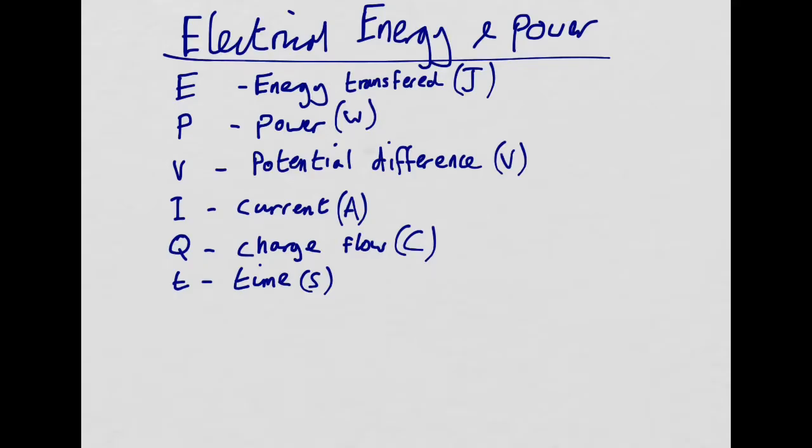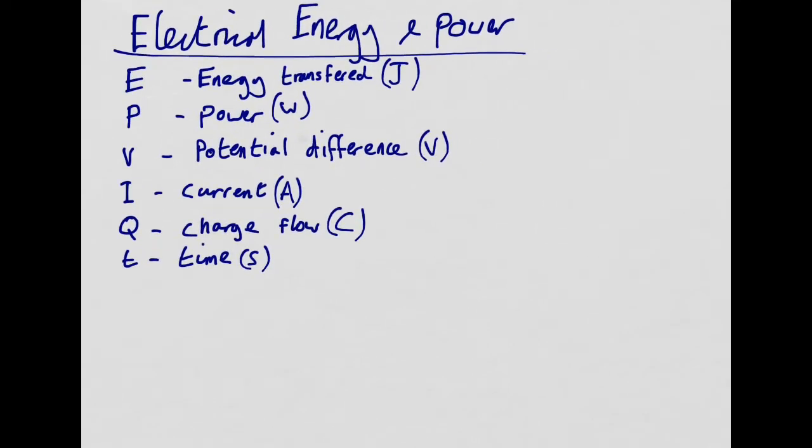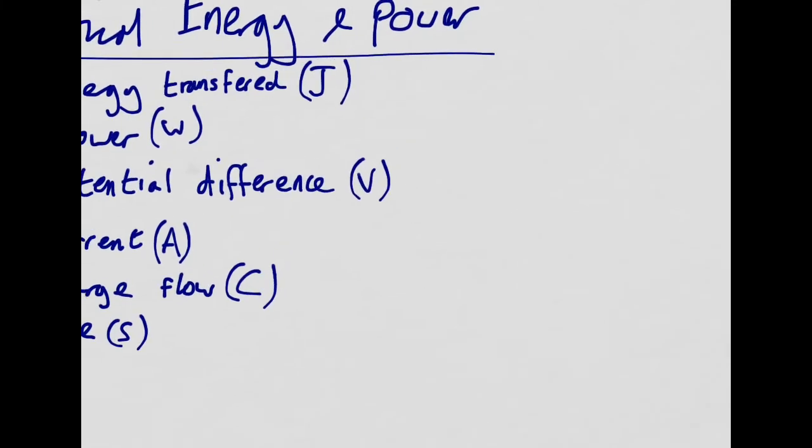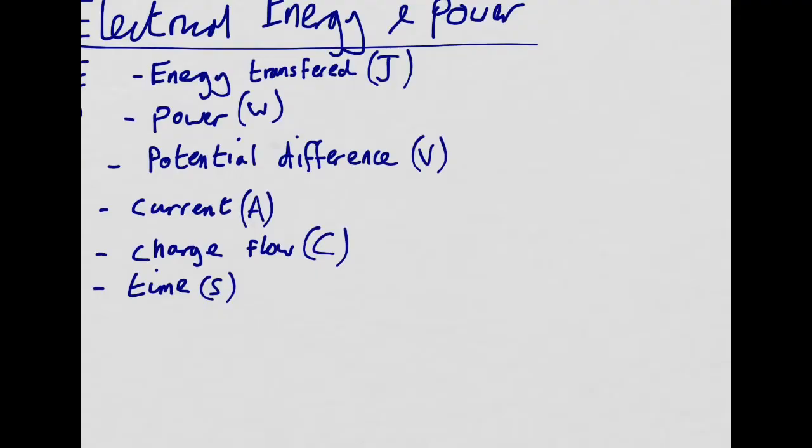Firstly then let's have a look at current. So remember what current actually is. Current is the flow rate of charges or the charge per second. So we can represent this as I, current, is equal to the charge that flows through a certain part of your circuit per second. I is Q over T.